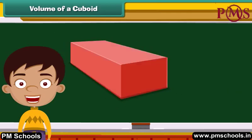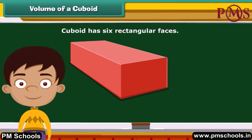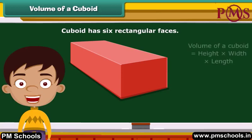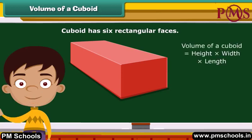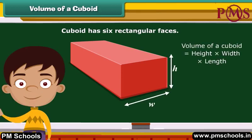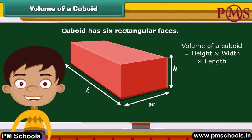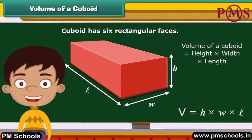Look at this closed box. This is a cuboid which has six rectangular faces. Its volume is calculated as height times width times length. Or simply, volume equals H times W times L.